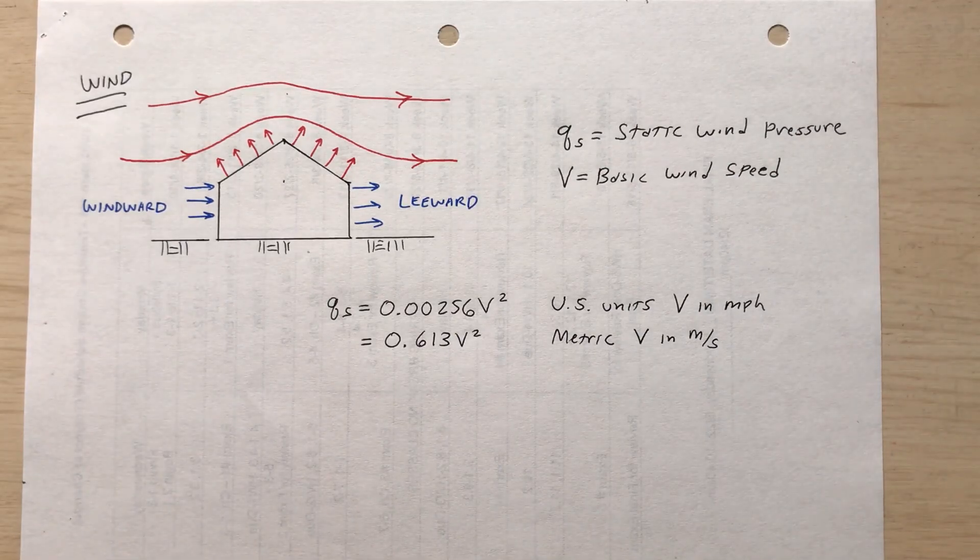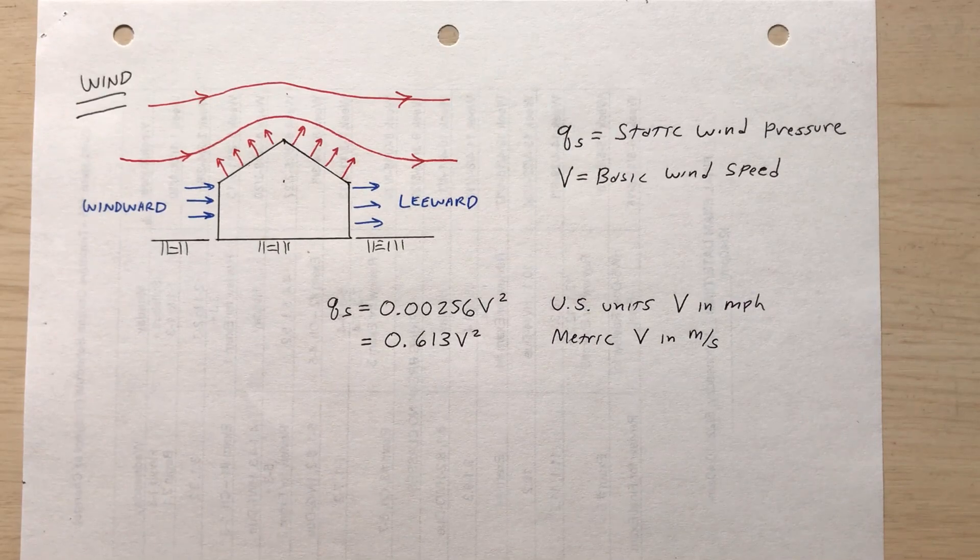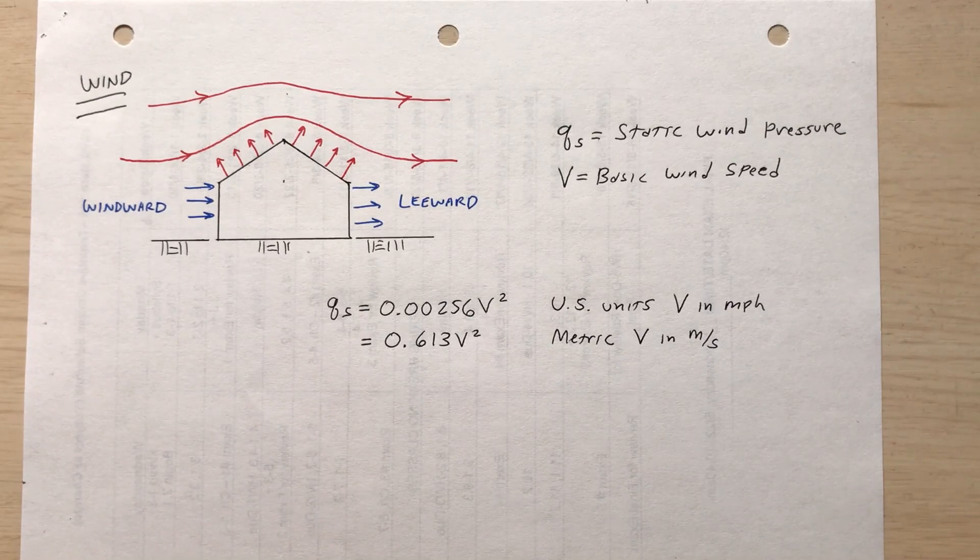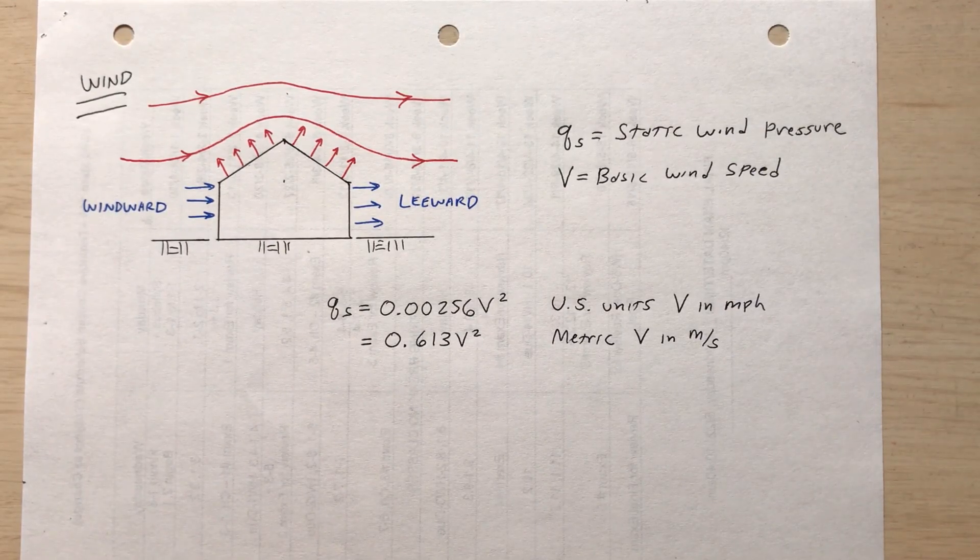So we calculate Q sub s and then multiply that by appropriate factors to calculate the design wind pressure. So there's different variations of this formula. So you would have to check with whatever the code is that you're following.